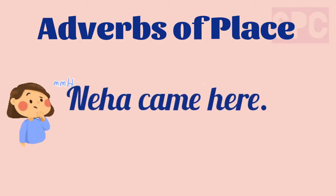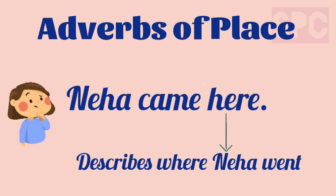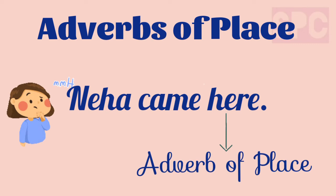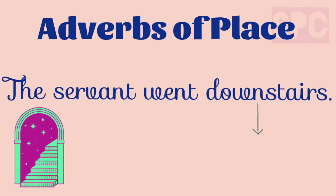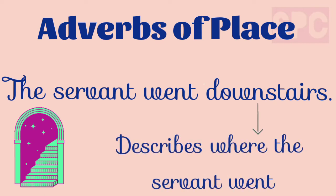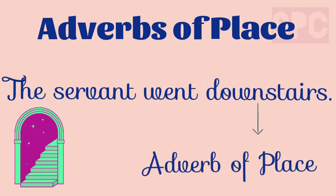Let's understand how to use adverbs of place in sentences. First example: Neha came here. In this sentence, the word 'here' tells us where Neha went. So, 'here' is the adverb of place. Second example: the servant went downstairs. In this sentence, the word 'downstairs' describes where the servant went. So, 'downstairs' is the adverb of place.